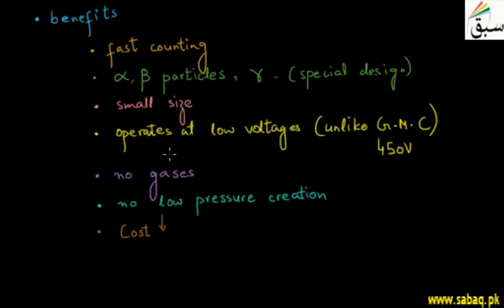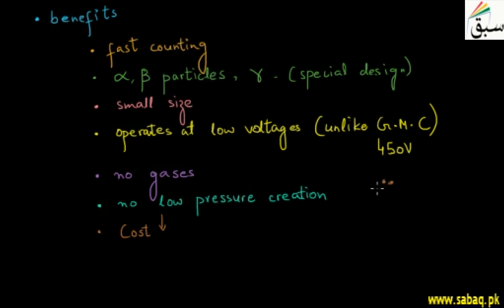So I hope that we have discussed the solid state detector and the benefits, which are fast counting, detection of alpha, beta, and gamma, small size, low voltage operation, no gases, and low cost.